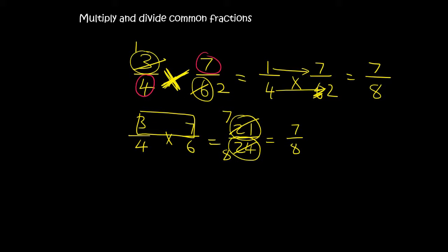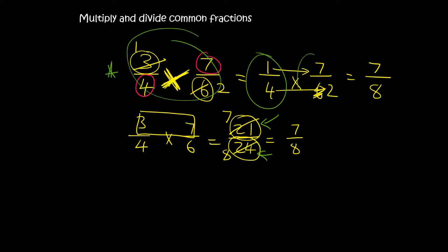The reason it's nice to cross-cancel at the beginning is that we end up using smaller numbers. Notice we had to use 21 and 24 in the second approach, whereas with cross-canceling we only used small numbers like 7, 2, 4, and 6.